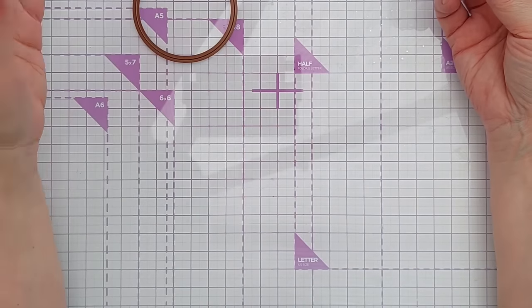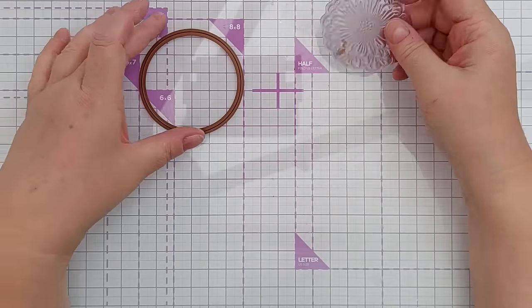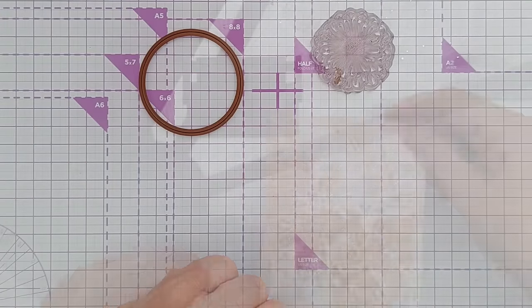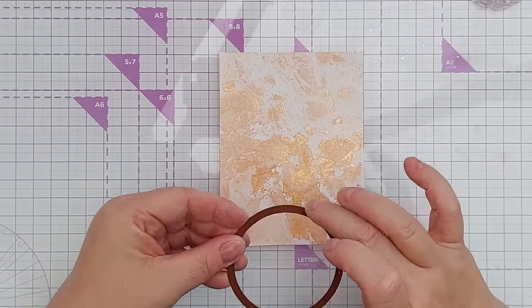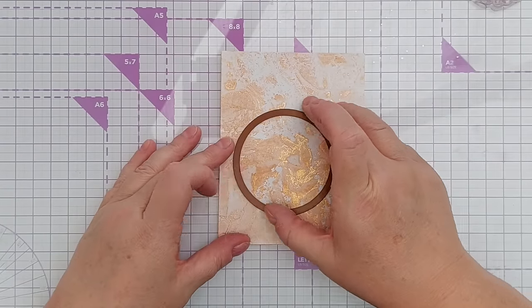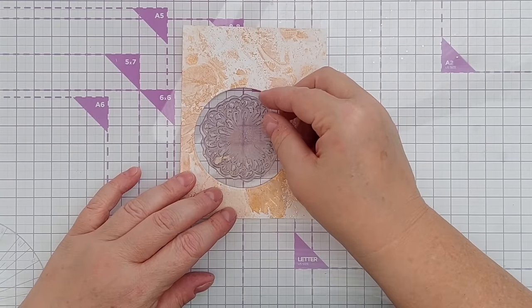Another way to achieve this look with dies and stamps is to take a die—this is a circle die—and a stamp, this is a flower stamp but it's fairly circular, and do that process. So I've got a background from my box of backgrounds and bits. I'm going to take this circle die and die cut out of it.